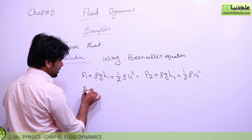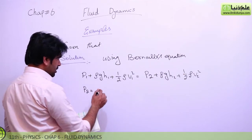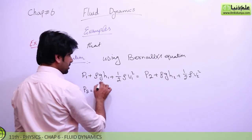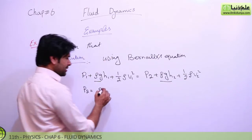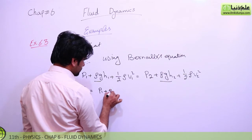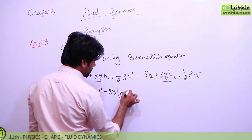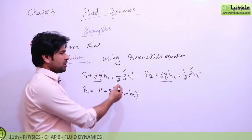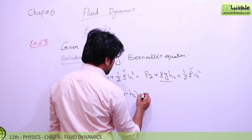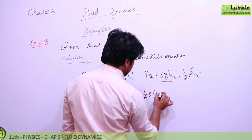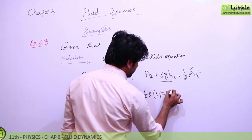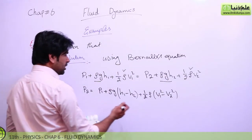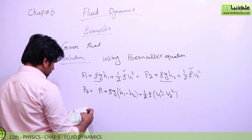By rearranging the Bernoulli equation, since ρ is constant and g is constant, we can group the height terms as ρg(h1 − h2). Similarly, the kinetic energy terms can be written with ½ρ common, giving ½ρ(v1² − v2²). We have the difference in length of the funnel, so p2 equals p1 plus these rearranged terms.